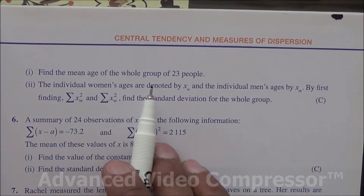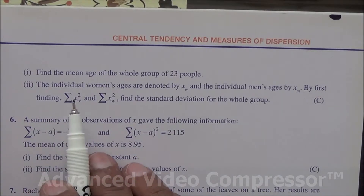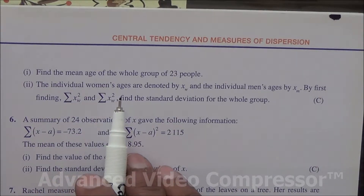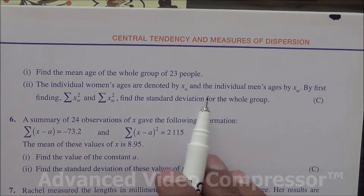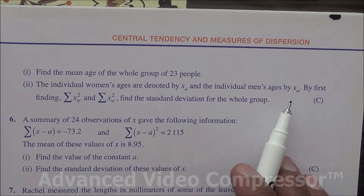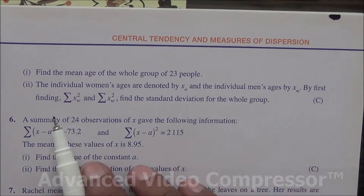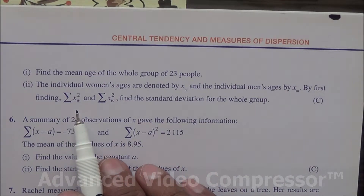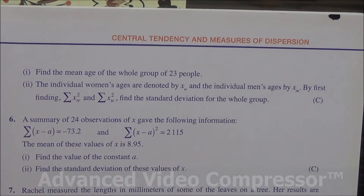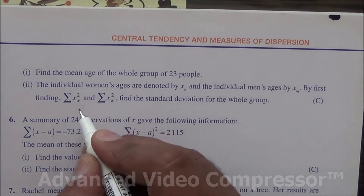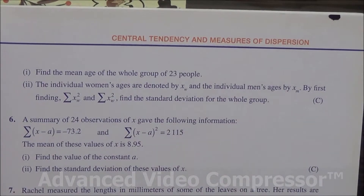The question is: find the mean age of the whole group of 23 people. Also, the individual women's ages are denoted by X_W, and the individual men's ages are denoted by X_M. By first finding summation of x squared for the women and summation of x squared for the men, find the standard deviation of the whole group.